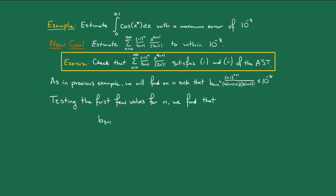That is, b₄ = (0.1)⁴ / (17 × 8!) ≈ 1.46 × 10⁻¹⁰, which is less than 10⁻⁸.